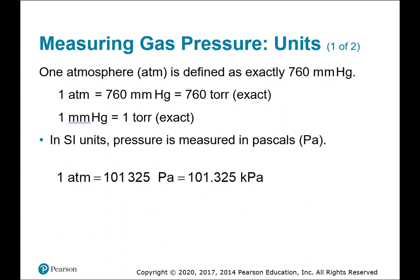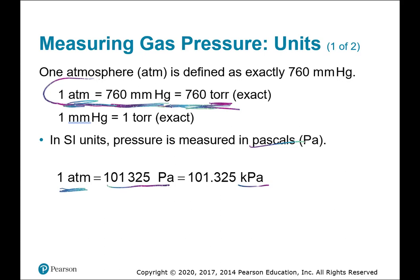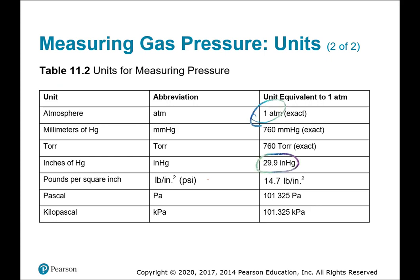There are many different units to measure pressure, so there needs to be a way to convert between them. One atmosphere equals 760 mmHg, which equals 760 torr, meaning one mmHg equals one torr. In SI units, one atmosphere equals 101,325 pascals, or 101.325 kilopascals. One atmosphere also equals 29.9 inches of mercury or 14.7 pounds per square inch.